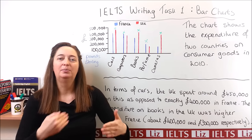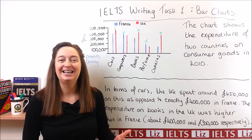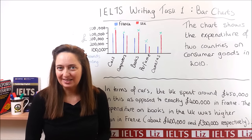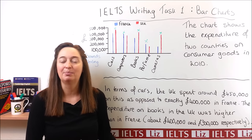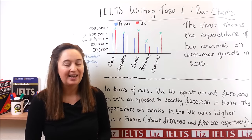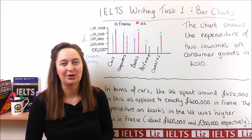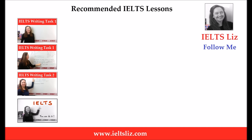If you would like to see the full model answer — a band score nine piece of writing for this chart — I will give you a link at the end of this video so you can have a look. Well, that's all for this lesson. If you found it useful, please press like. If you have questions, put them under the video or visit my blog. On my blog there are many answers to questions about Writing Task 1, as well as all the other skills in IELTS. I will see you again in another IELTS lesson.